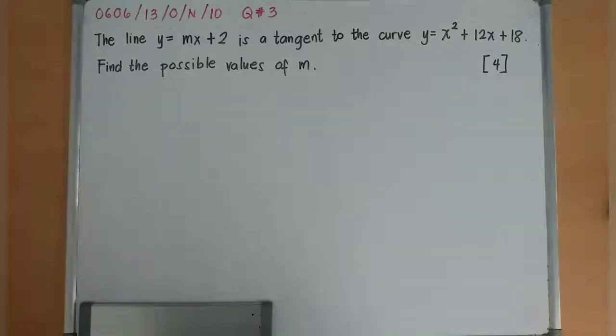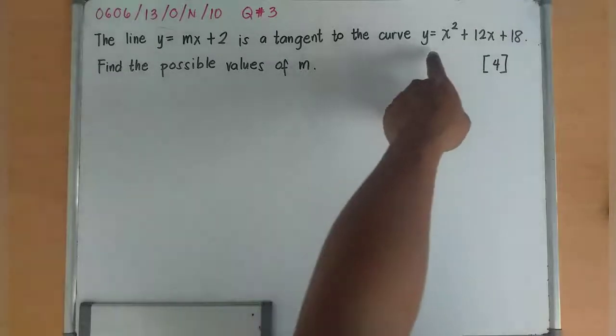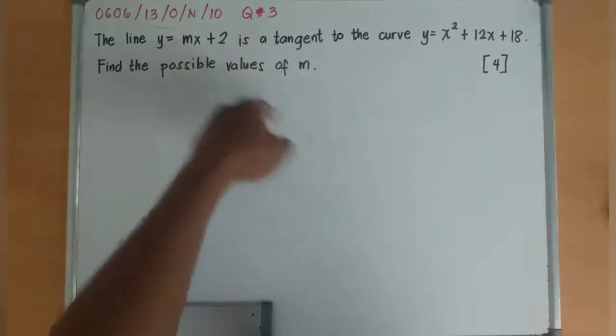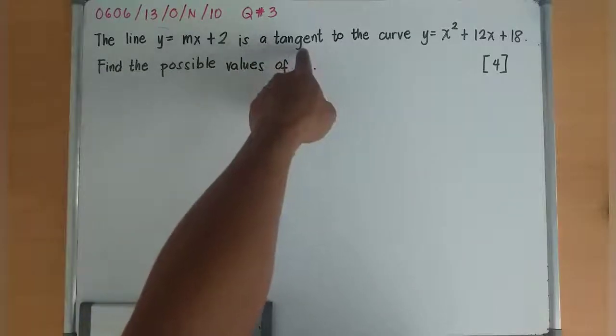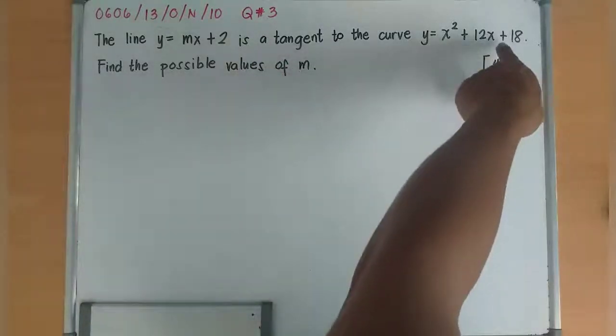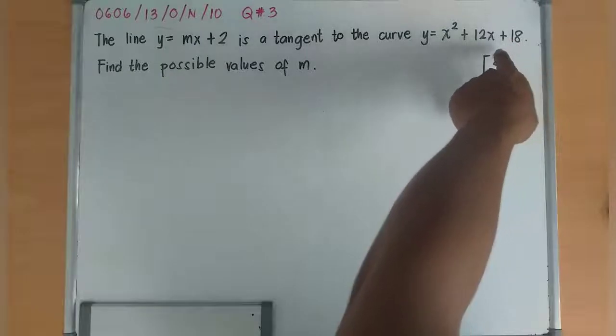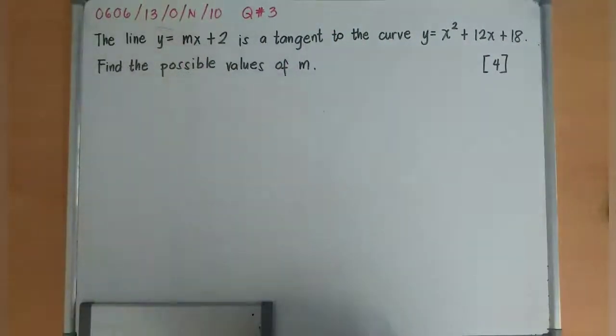But this is not all about tangent, this is all about quadratics because I have a curve and a line. A curve and a line that has a tangent, or the curve which is a quadratic and has a tangent that is a line.